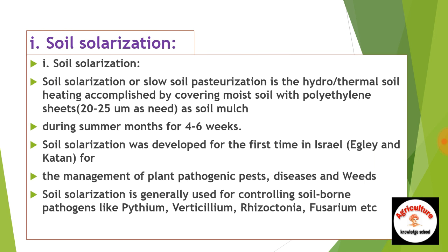Soil solarization is the hydrothermal soil heating accomplished by covering moist soil with polythene sheets of 20 to 25 micrometers as a soil mulch during summer months for 4 to 6 weeks. Soil solarization was developed for the first time in Israel and is generally used for controlling soil-borne pathogens.